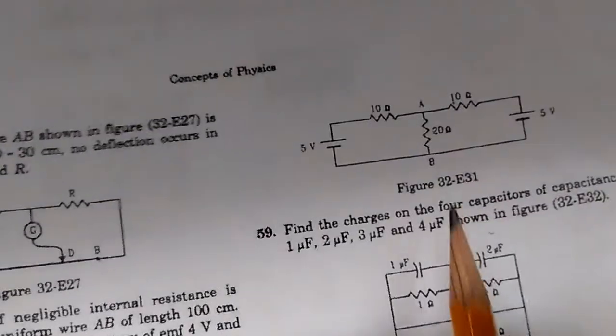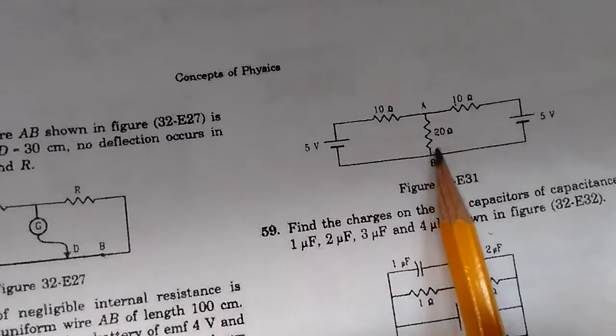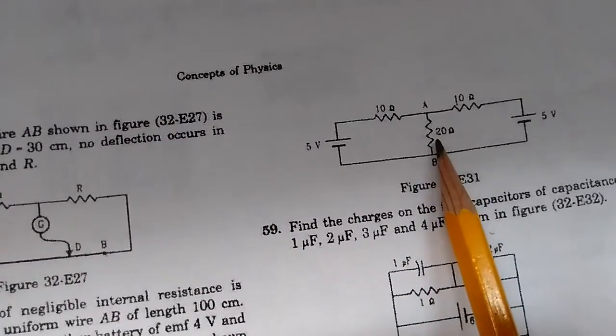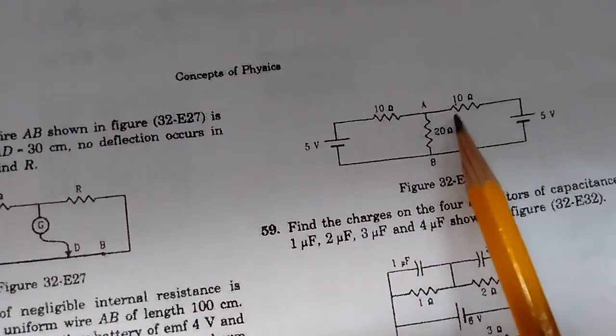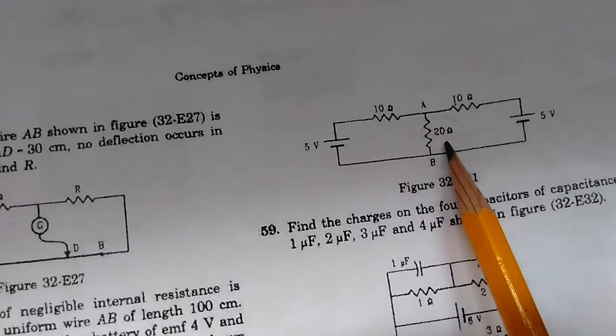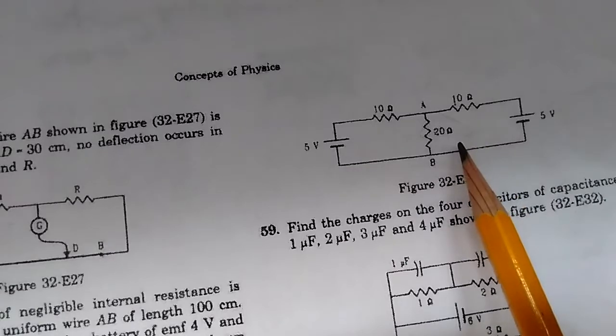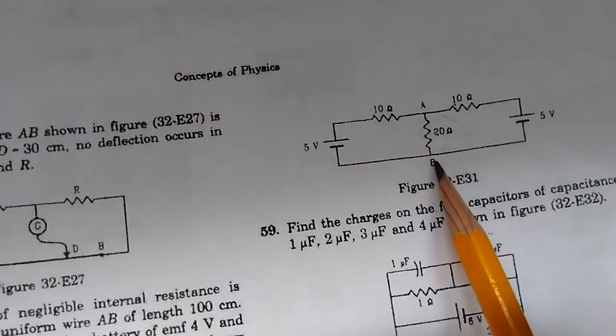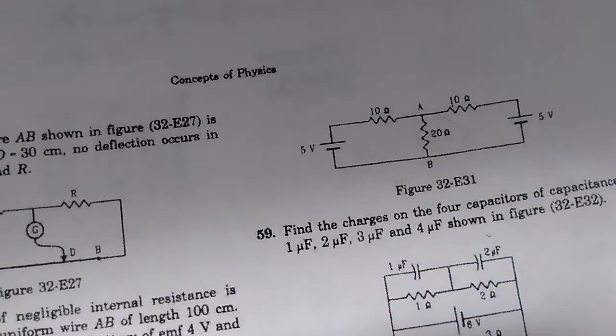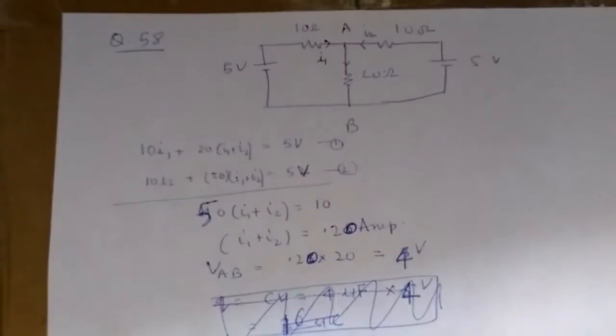The second part asks: if a capacitor of 4 microfarads is connected between points A and B, what is the electrostatic energy stored in it in steady state? First, let's do the current part.